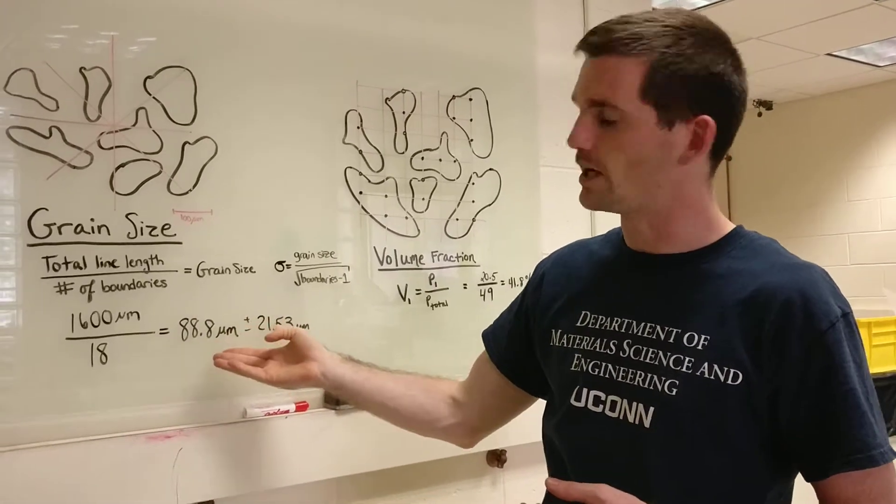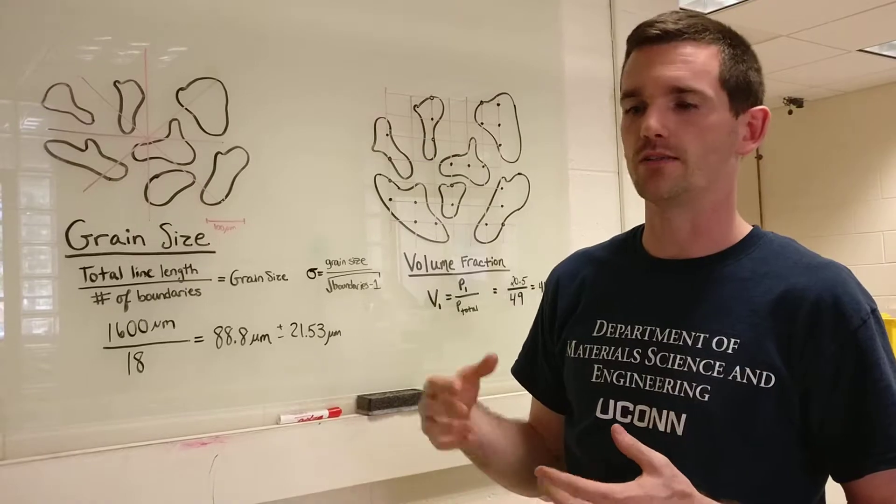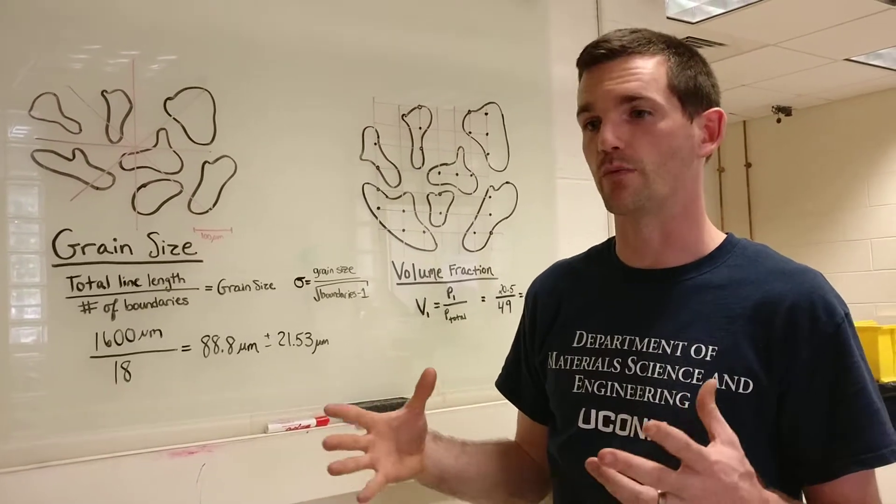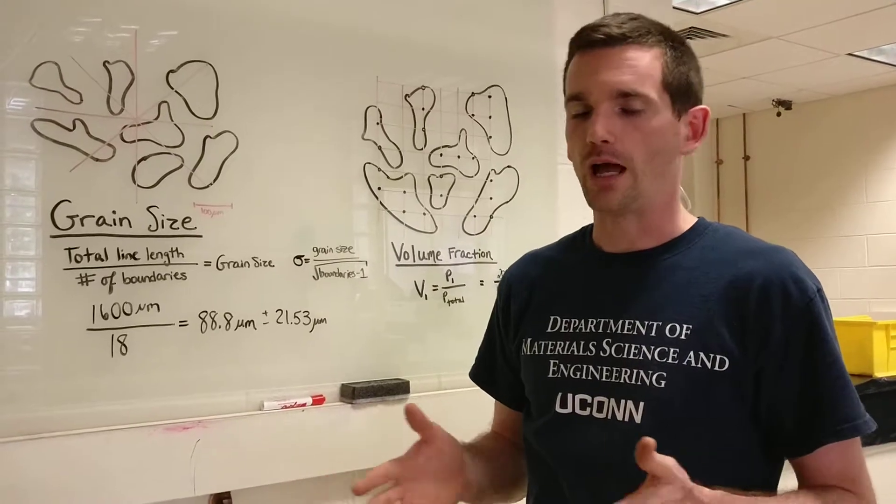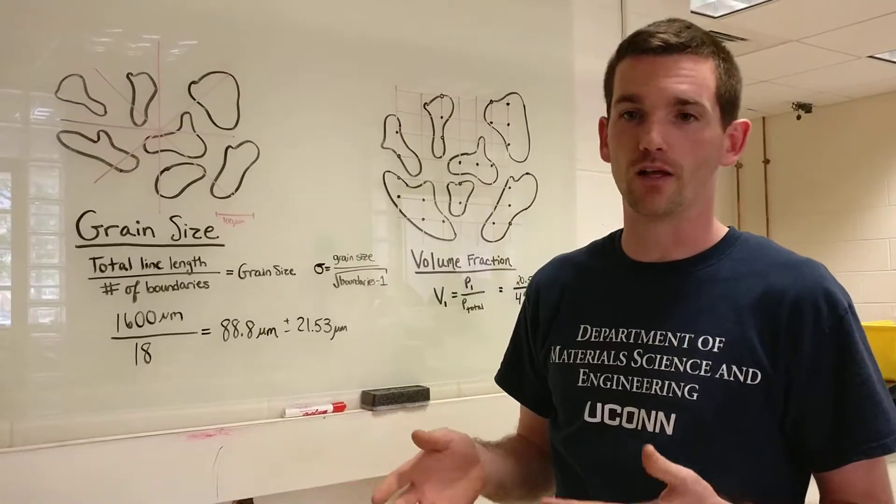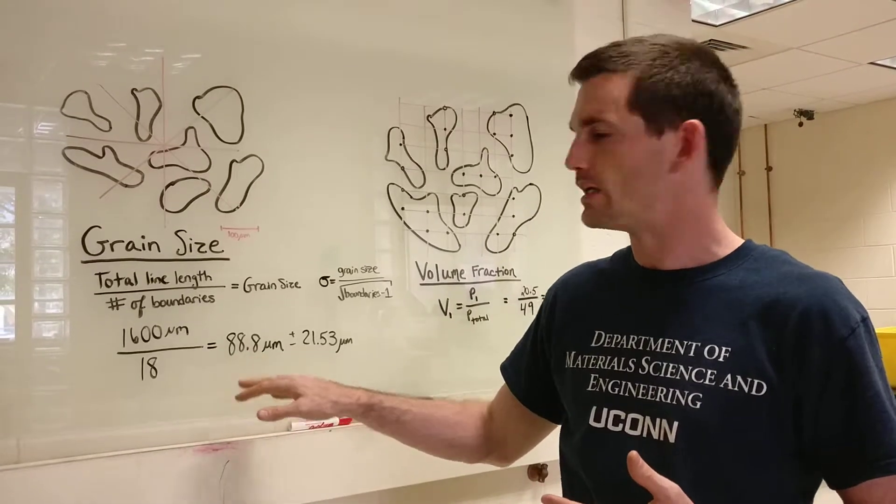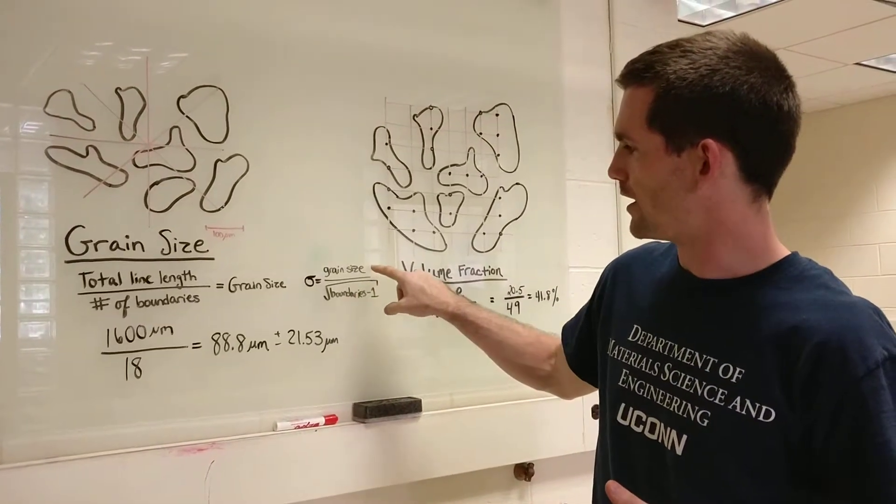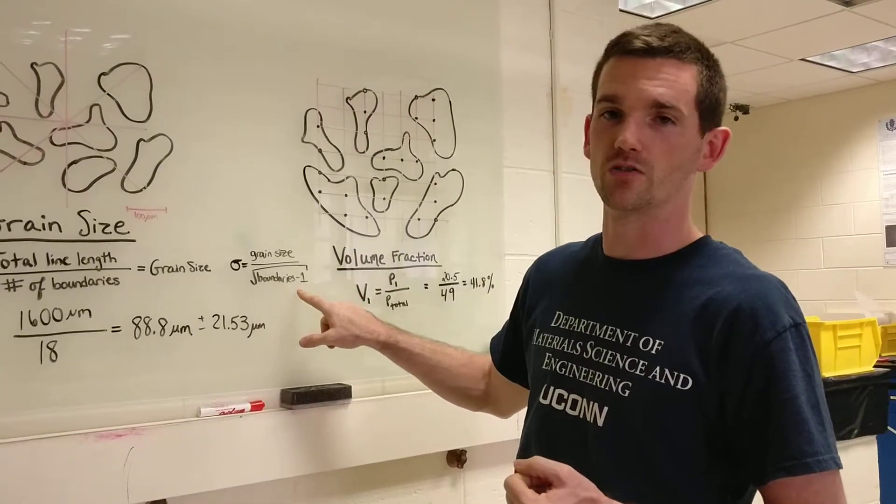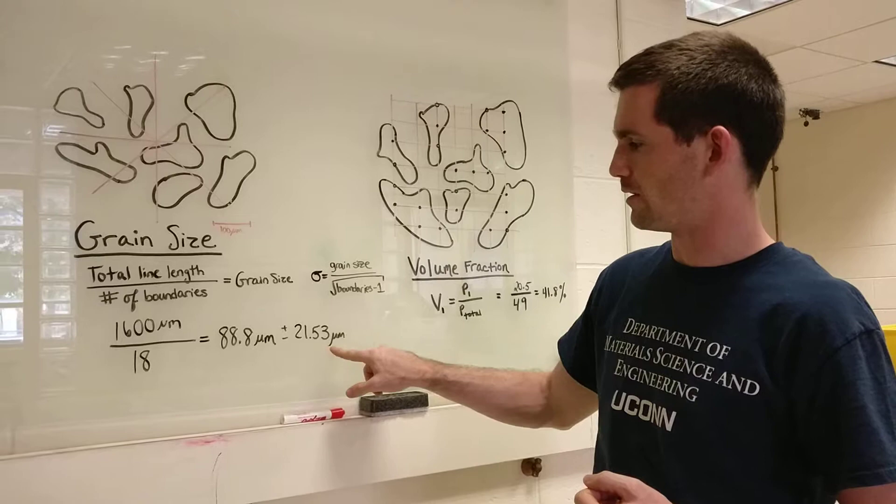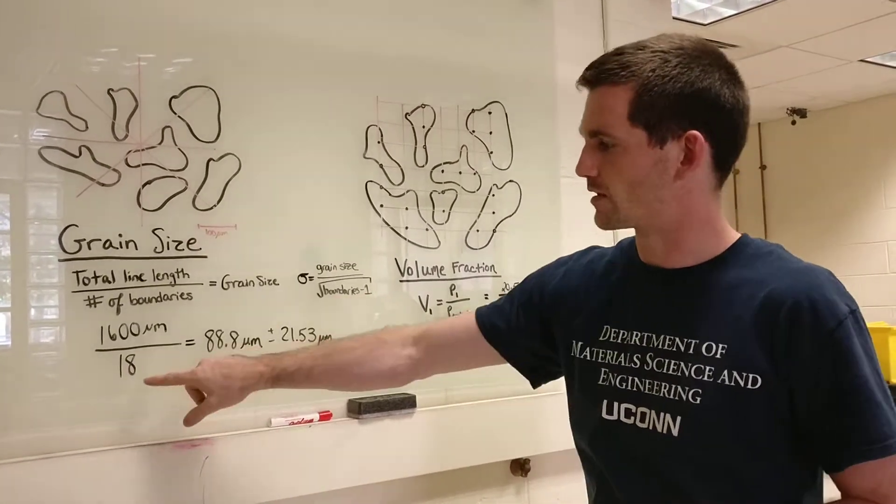We total those up and we get 18 boundaries for all of the lines. We divide those two to get an average grain size of 88.8, and then we have a standard deviation. Obviously not all the grains are the same size. Some are smaller and some are bigger. We want to say how much deviation do we have. The way we get that is by dividing grain size by the square root of the number of boundaries we counted minus 1, and that will be a number 21.53. This would be square root of 17 in this case.